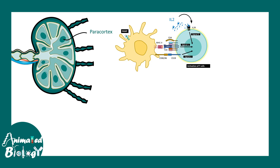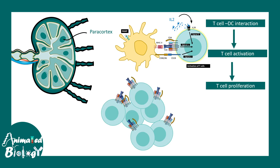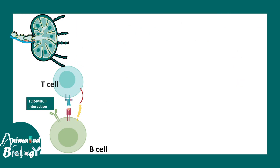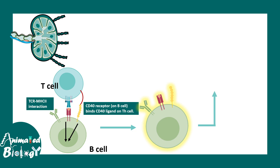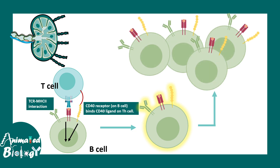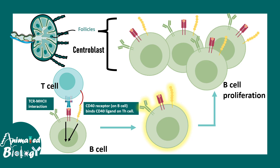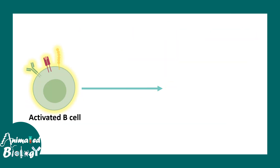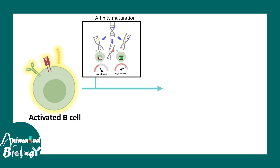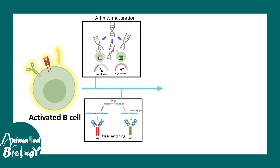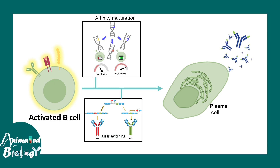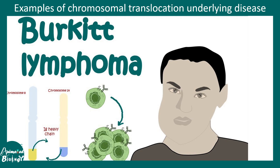The dendritic cell activates the T cell, T cell proliferates and increases in number, then eventually the T cell interacts with the B cell leading to its activation. When the B cell is activated it rapidly proliferates and creates the germinal center — the center part of the lymphoid follicle. These cells are also known as centroblasts. Activated B cells undergo molecular changes like affinity maturation, selecting B cells with high affinity receptors, and class switching, ensuring production of one antibody isotype. All this happens in the germinal center.